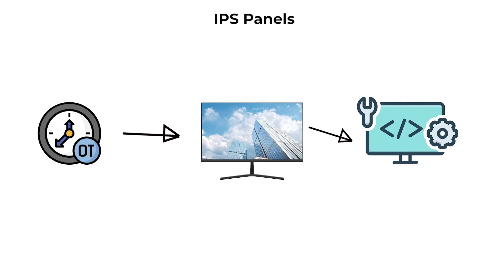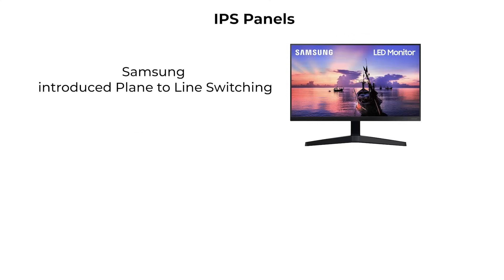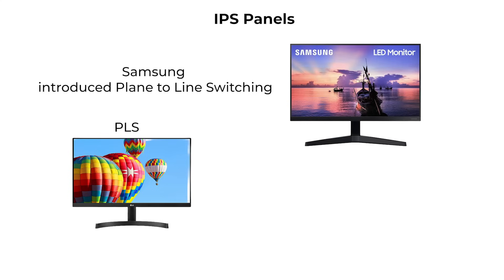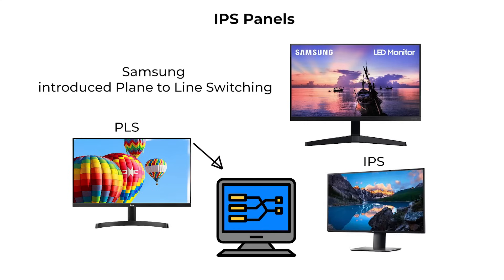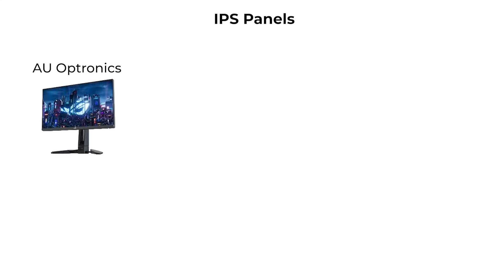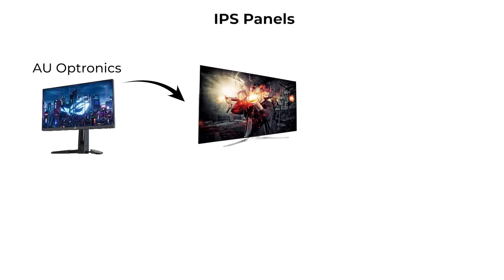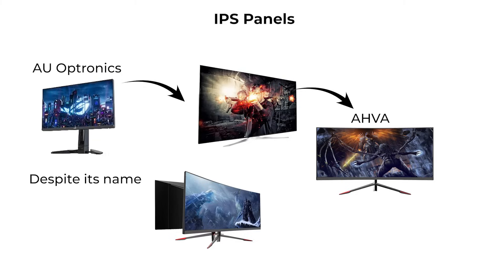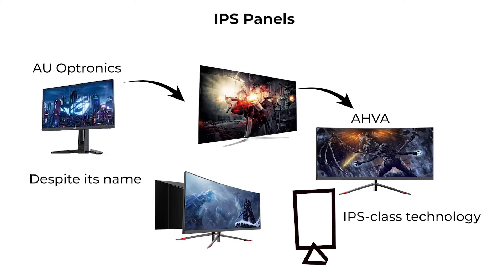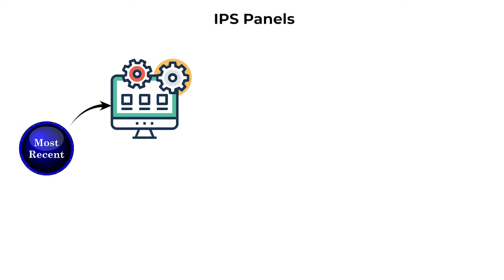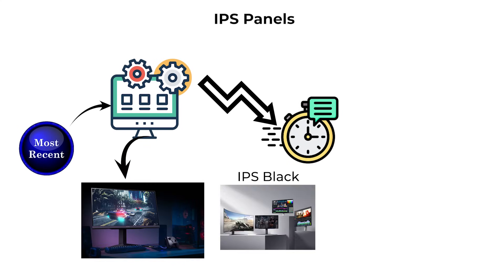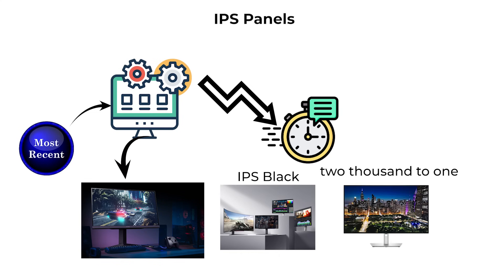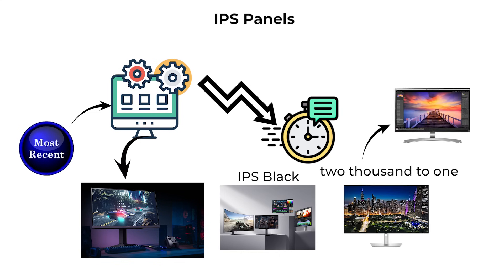Over time, IPS has developed multiple subtypes. Samsung introduced plane-to-line switching, or PLS, which is nearly identical in function to IPS but marketed under a different name. AU Optronics created Advanced Hyperviewing Angle, or AHVA. Despite its name, AHVA is not related to vertical alignment — it is an IPS-class technology. More recent developments include Fast IPS, which reduces response times to make IPS better suited for gaming, and IPS Black, which increases contrast ratios to nearly 2,000 to 1, approaching the deep blacks normally associated with VA technology.